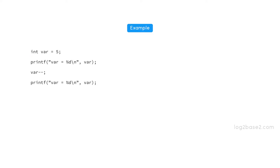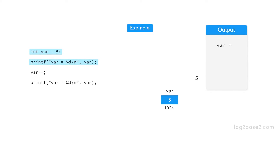We are declaring an integer variable var and initializing it to 5. Now we are printing the value of var, so it will print 5. Then we have var minus minus, which will decrement the value of var and it will become 4. Now we are printing the value of var again, and this time it prints the decremented value 4.